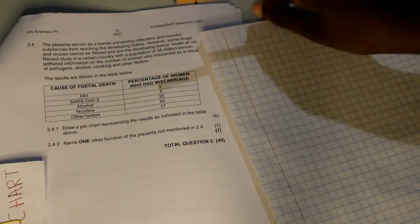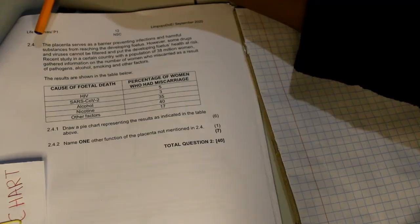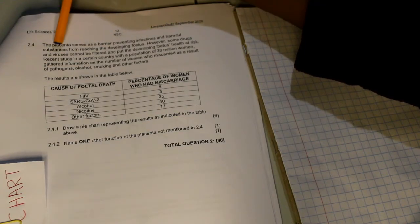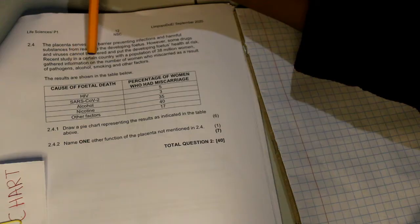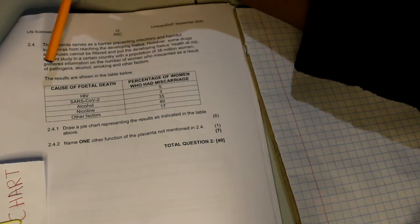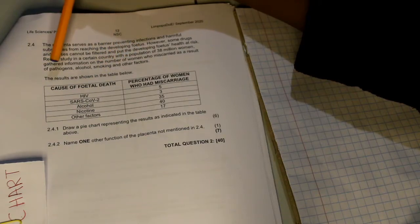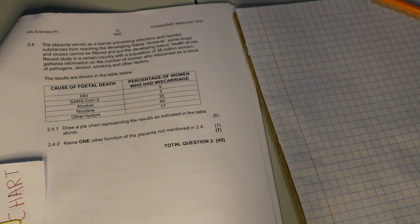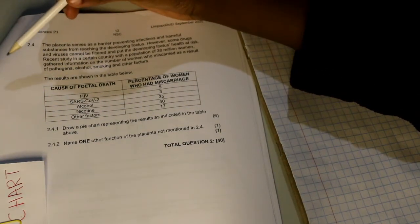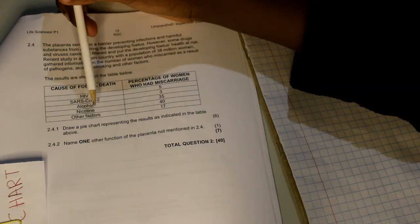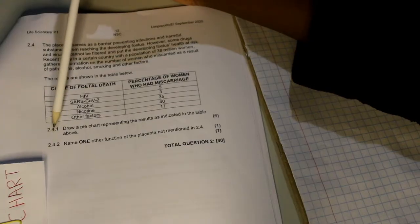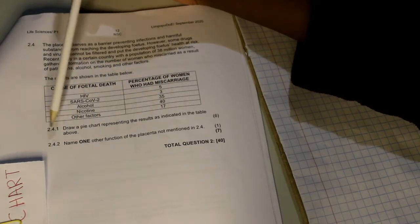I am going to read the case study here. So it says the placenta serves as a barrier preventing infections and harmful substances from reaching the developing fetus. However, some drugs and viruses cannot be filtered and put the developing fetus health at risk. Recent study in a certain country with a population of 38 million women gathered information on the number of women who miscarried as a result of pathogens, alcohol, smoking, and other factors. The results are shown in the table below. They give us the data in the form of a table. So cause of fetal death: HIV, SARS-CoV-2, alcohol, nicotine, and other factors, percentage of women who had miscarriage. 2.4.1 they ask us, draw a pie chart representing the results as indicated in the table above.